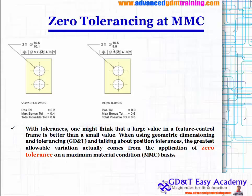Most people think that a larger value in your GD&T callout feature control frame is better and will be more economical. But when using geometric dimensioning and tolerancing with Zero Tolerancing, you actually always get the maximum tolerance only through Zero Tolerancing. Most people get confused for the very genuine reason that when they see zero in the callout, common sense tells them a larger value gives more tolerance — but that is not true.